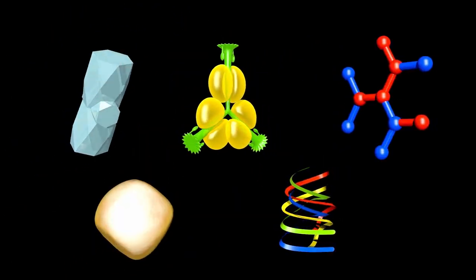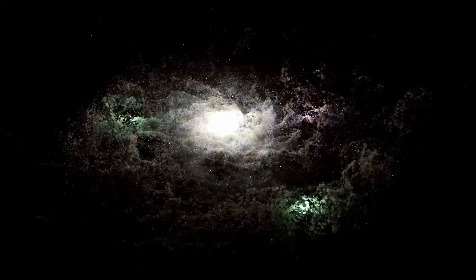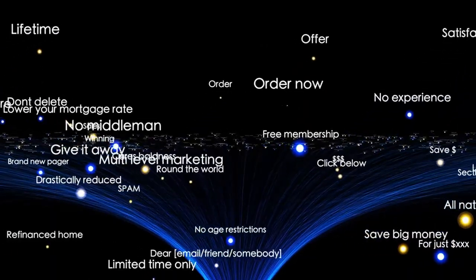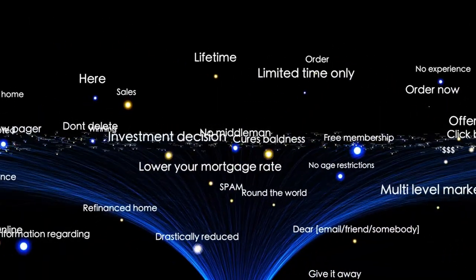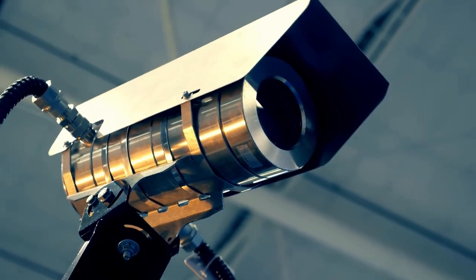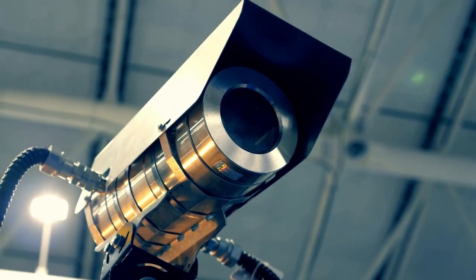The JWST data on 3.I/ATLAS forces this reframing. From a dynamics point of view, its hyperbolic trajectory confirms its interstellar origin. But now the interior story of its constituent materials is more complex. Its activity, outgassing, tail formation, and coma structure must be interpreted with a dual lens. Formation plus exposure.